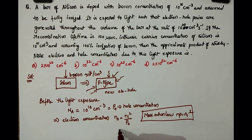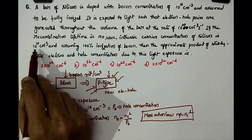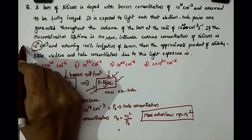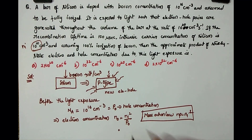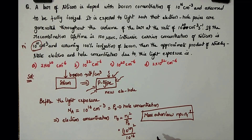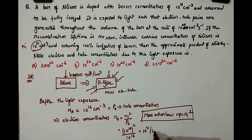So what is n naught? ni is given as 10 power 10. So n naught equals (10 power 10) squared divided by p naught, which is 10 power 16. The answer is 10 power 20 divided by 10 power 16, which equals 10 power 4 per centimeter cube.